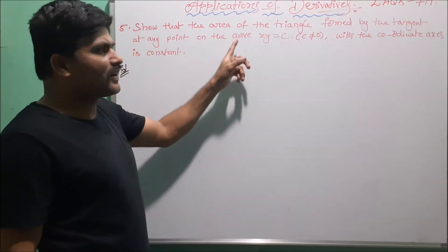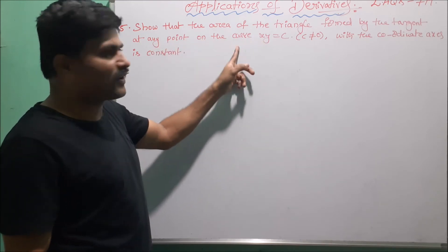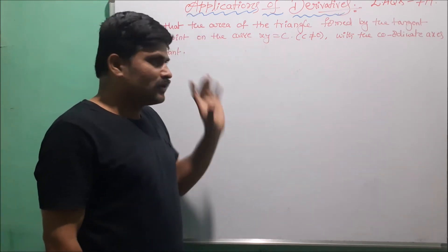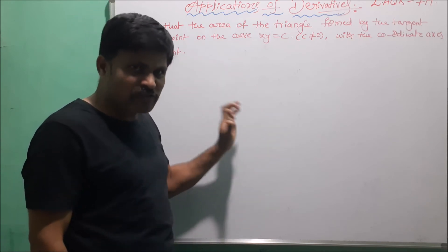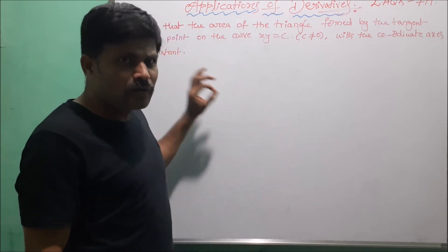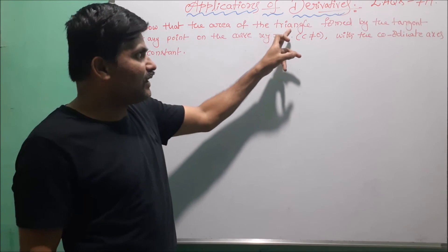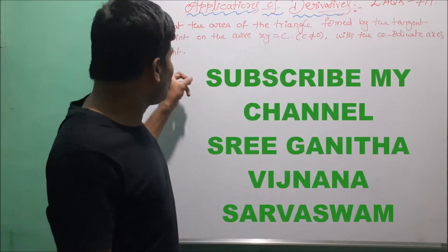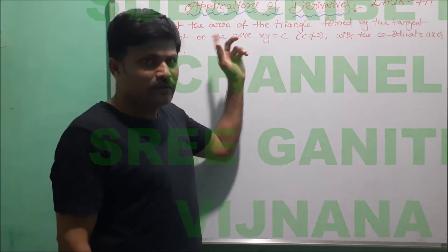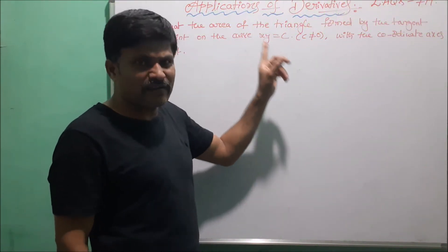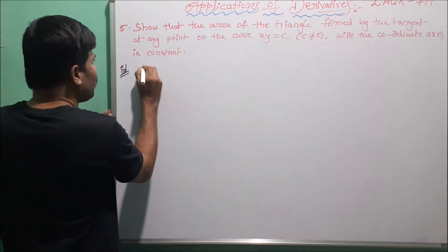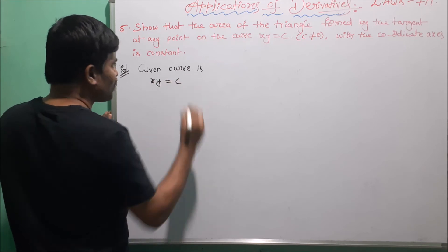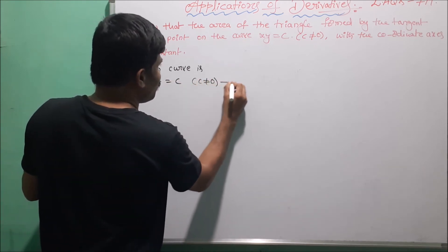The next problem: show that the area of the triangle formed by the tangent at any point on the curve xy = c with the coordinate axes is constant. Here also, first find the equation of tangent, convert it to intercept form, and then the tangent makes a triangle with the coordinate axes. The area of that triangle is always constant. Given curve is xy = c, where c is always not equal to zero — equation 1.